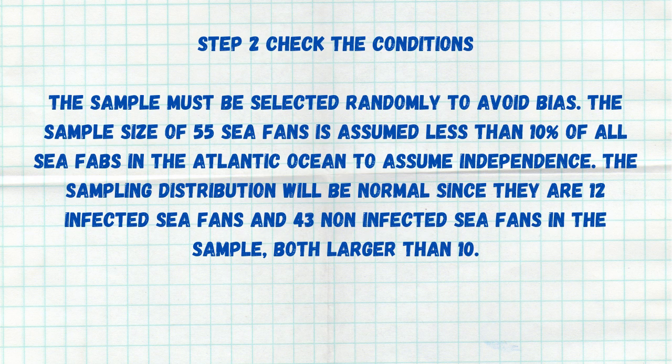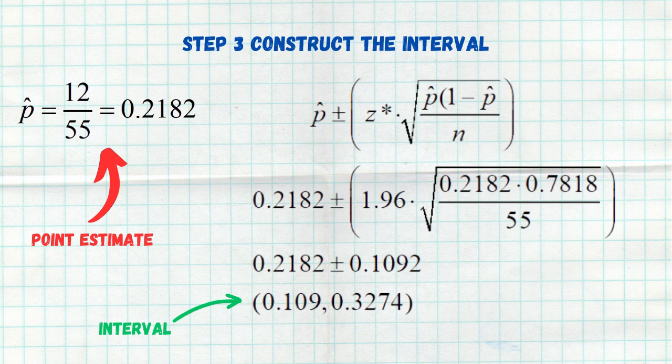Next, we're going to actually build the confidence interval. On the AP exam, they like when you start off with the formula: P hat plus or minus the critical value Z star times the standard error formula. Now all we do is substitute everything in. The 12 infected sea fans gives us a proportion — we take 12 divided by our sample size of 55 to get 0.2182 as the actual proportion of infected sea fans. From that value, we add or subtract our margin of error. The Z star for 95% confidence is 1.96, found using invert norm.